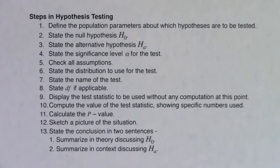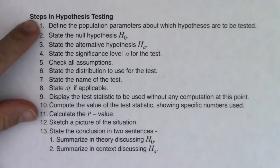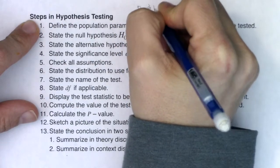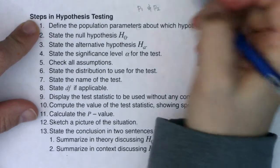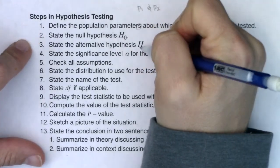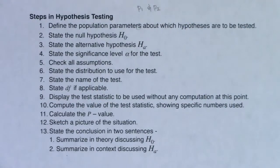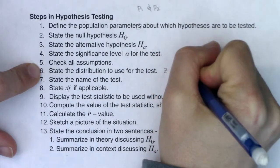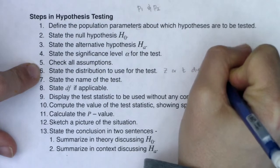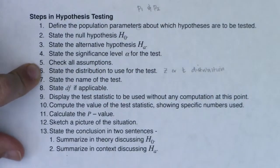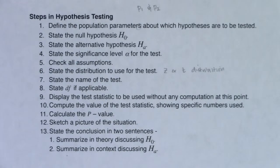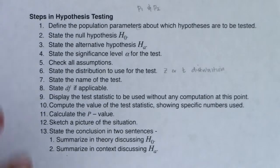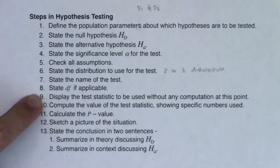We're back with the 13 steps from chapter nine. You're going to define parameters — plural now — P1 and P2. State your null and alternate, note your alpha (default 5% if not given), check assumptions, and state the distribution. In this chapter you'll either be on the Z or T distribution. Once we leave chapter 10, we'll add chi-squared or F. For chapters 8, 9, and 10, it's always Z or T — mean land or proportion land.